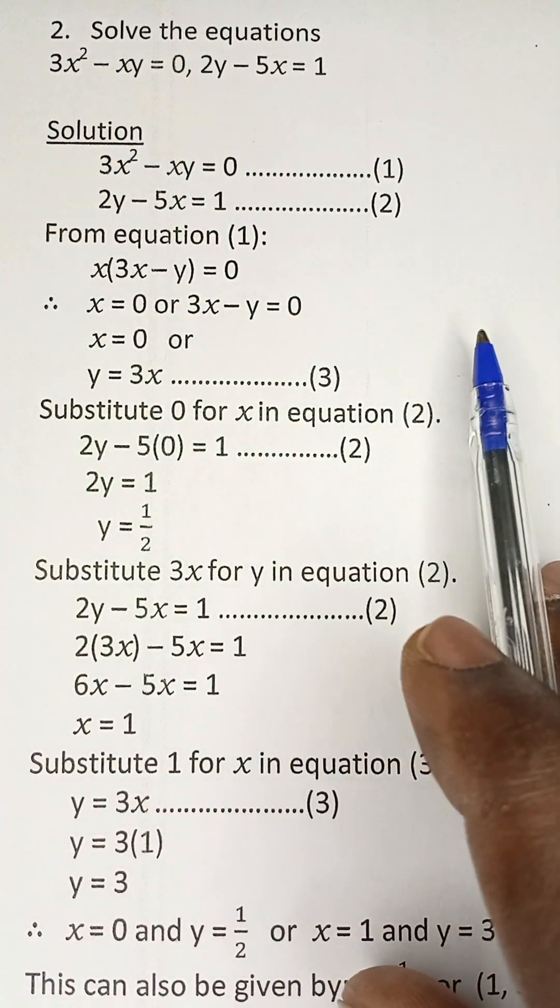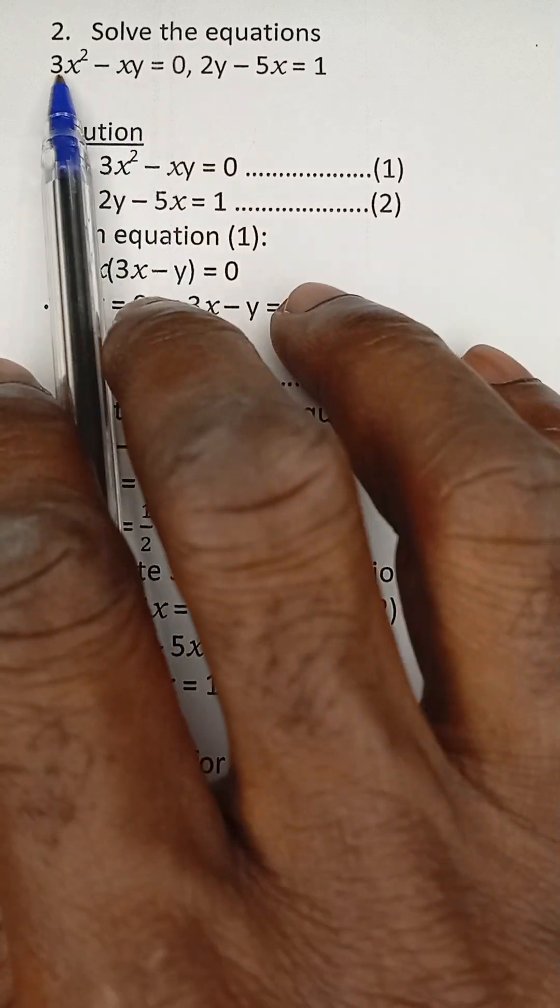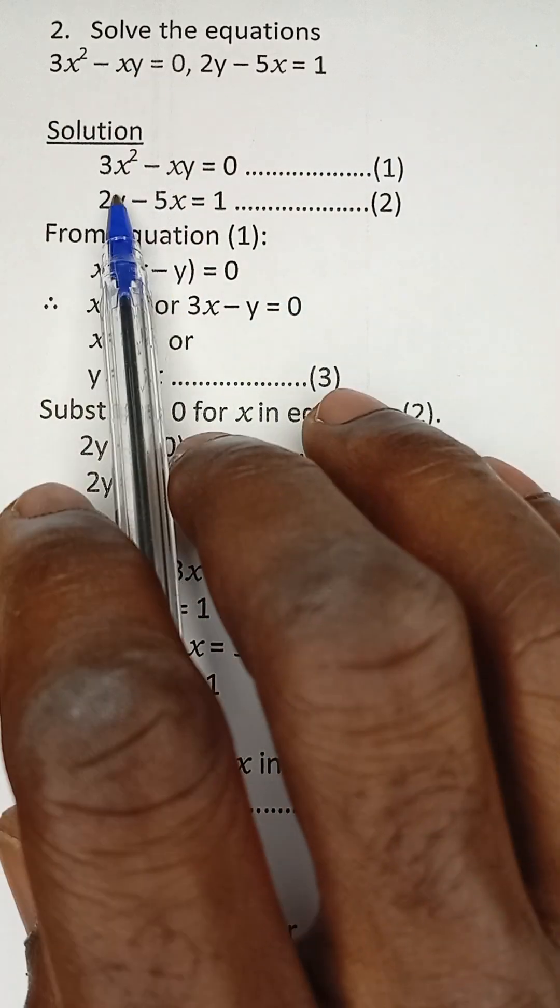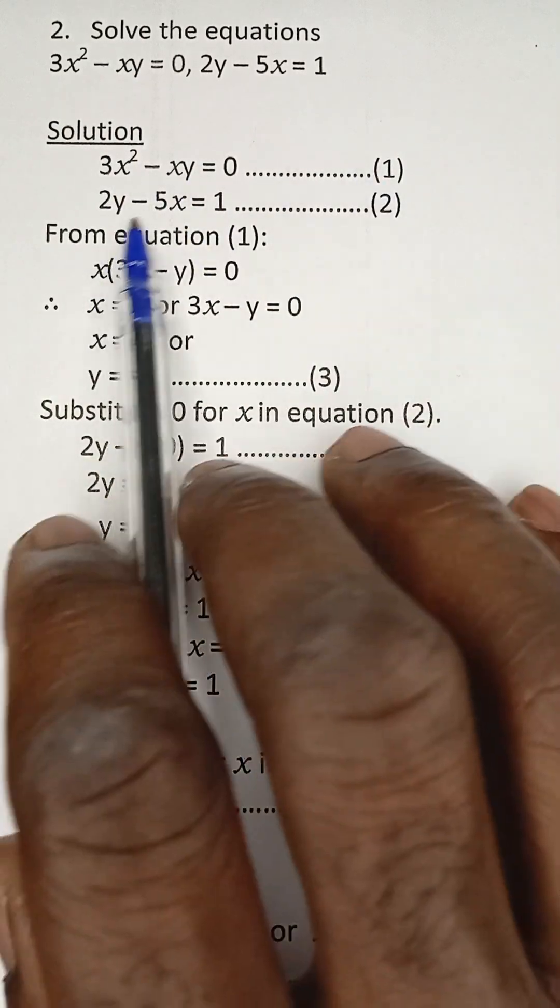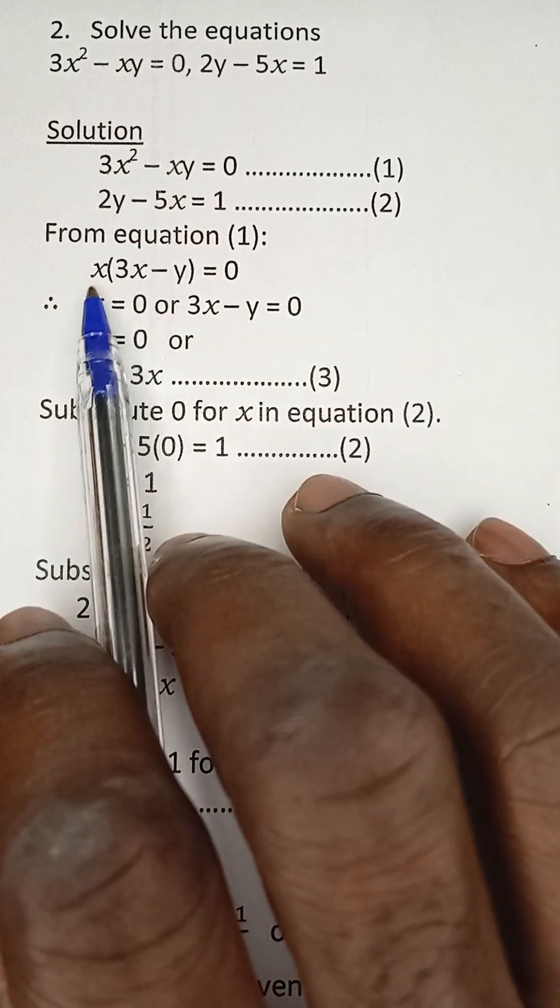One is linear, one is quadratic. For us to solve this, if we look at this equation, we can easily factor it. This is equation 1, this is equation 2. From equation 1, we can factor it.